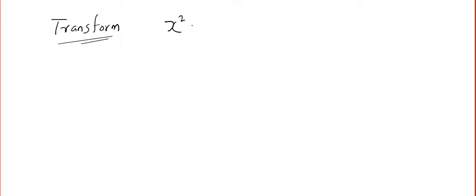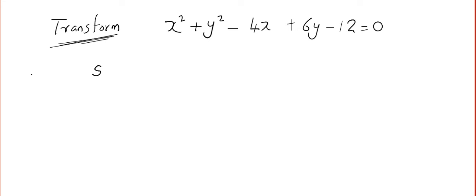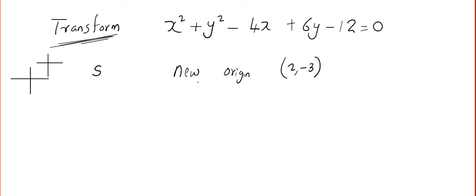Let us do one question. Transform the equation x² + y² − 4x + 6y − 12 = 0 by shifting to a parallel axis with the new origin at (2, −3). They can ask like this: shift it to the new origin, shift through the point in a parallel manner, or simply they will say translate. Remember, translation means moving the x-axis and y-axis so that the new system will be parallel to the old system.